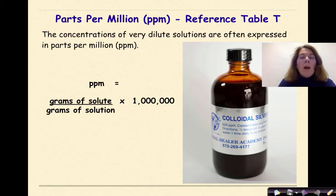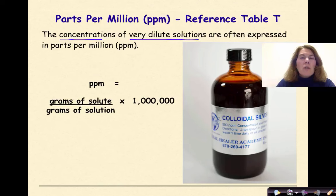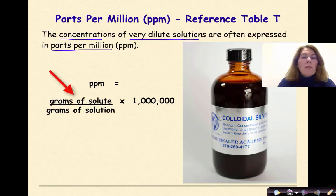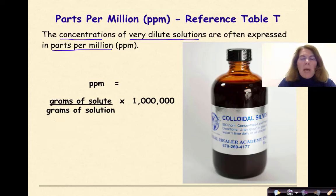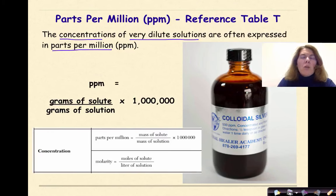Now let's talk about parts per million, represented as PPM. This is also found on reference table T. Parts per million is used when you have concentrations of very dilute solutions — often because percent by mass or percent by volume is just not detailed enough. Parts per million is equal to grams of solute over grams of solution times 1 million. This is no different than percent by mass or percent by volume — the only change is that you're multiplying by 1 million instead of 100. This formula is also found on your reference table under concentration.